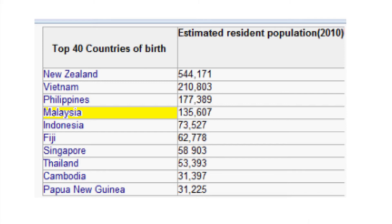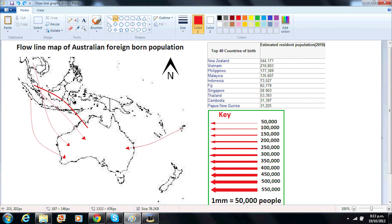There are 135,000 Malaysians, so we will make a two millimeter line flowing from Malaysia.